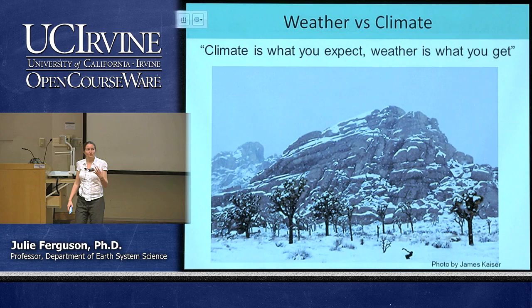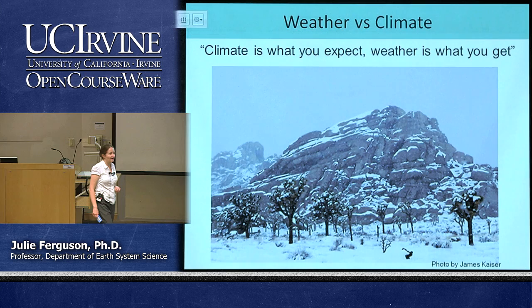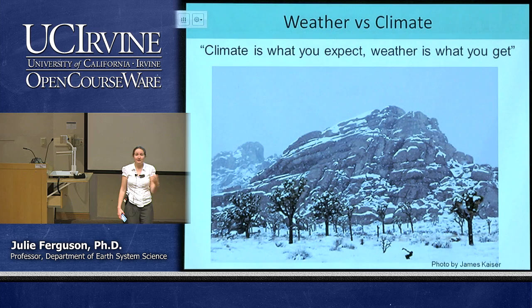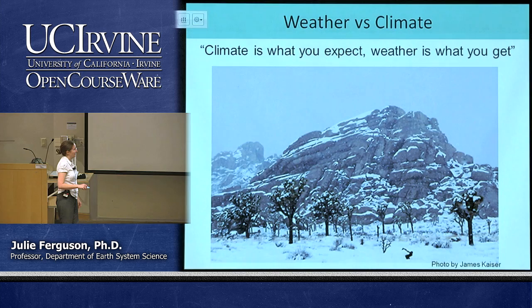Here's a nice example. Does anyone know what this is a picture of? Joshua Tree, which is just two hours inland — and it shows this is weather. We would expect the climate there to be hot and dry, but weather is what you get, which can be little anomalies associated with that.